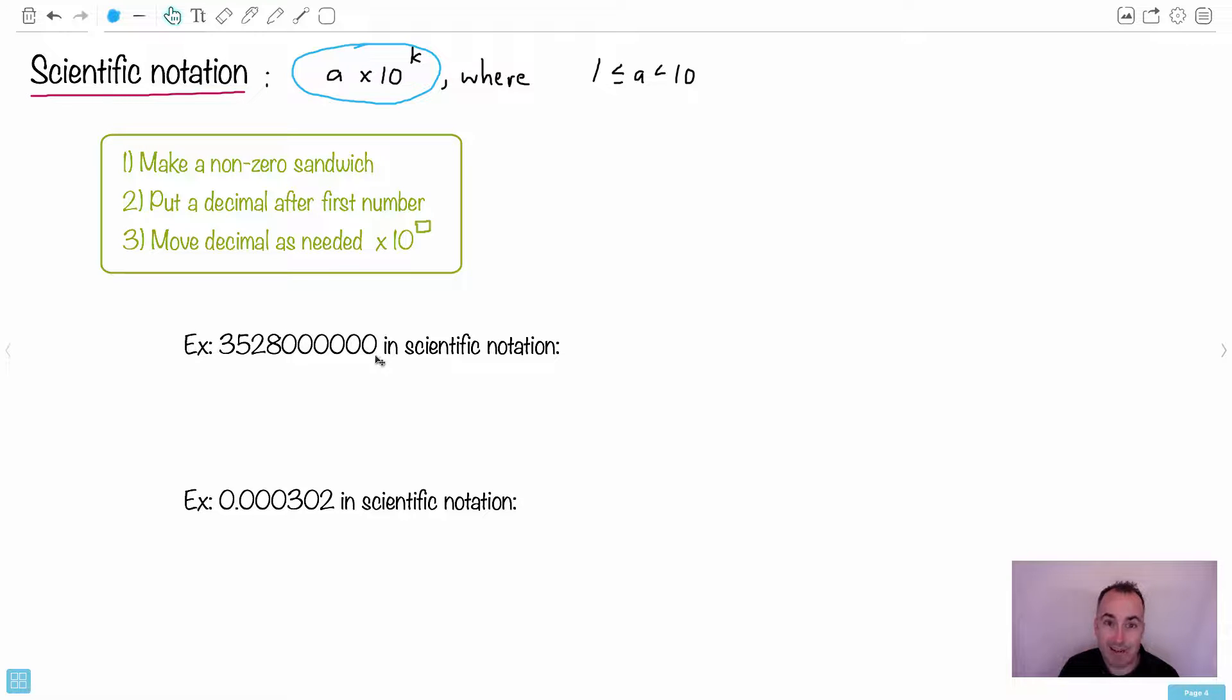For example, let's look at this one here. We have 3, 5, 2, 8, 0, 0, 0, 0, 0, 0. Now, these ones here are significant. So we can't just rewrite some number. We have to write a number that means the same thing. We can't just make up whatever. So first step is to make a non-zero sandwich. What do I mean by that? We take the leftmost non-zero number, which is the 3. We take the rightmost non-zero number, which is the 8. So my non-zero sandwich is this, 3, 5, 2, 8. These are all the non-zero numbers I need. So any zeros in between them, I count them. But any zeros to the left or to the right, I ignore those. So see, now I've done my non-zero sandwich.